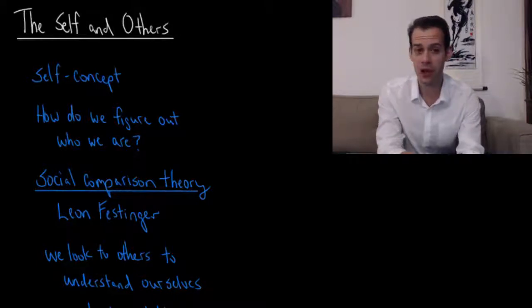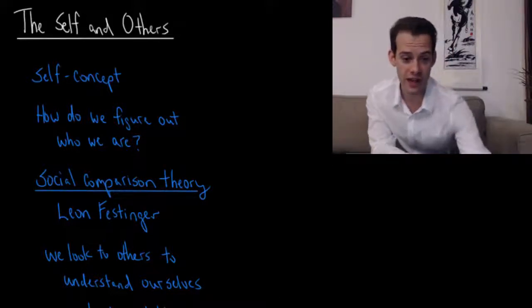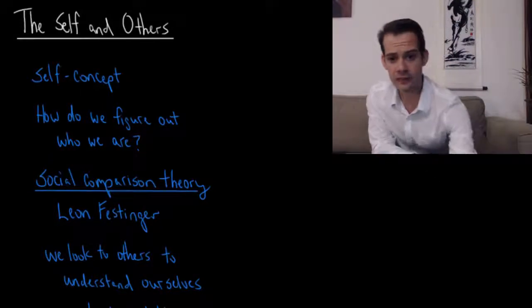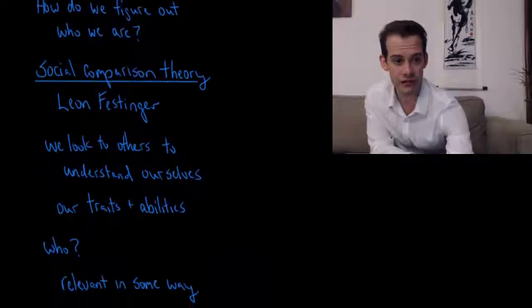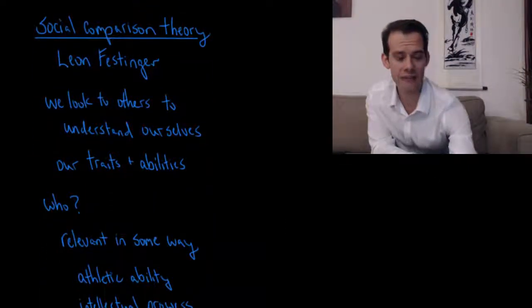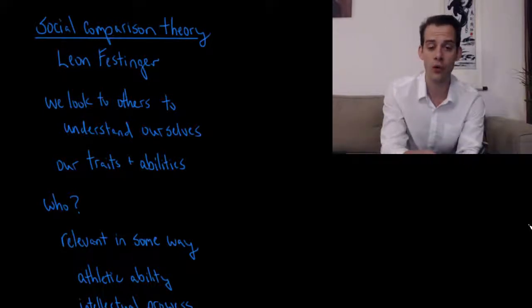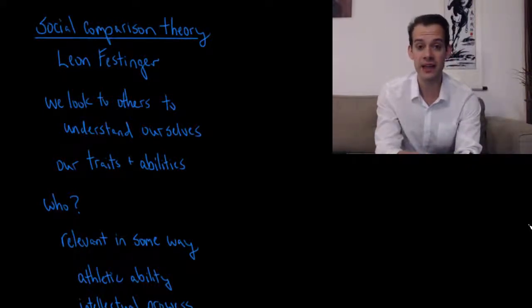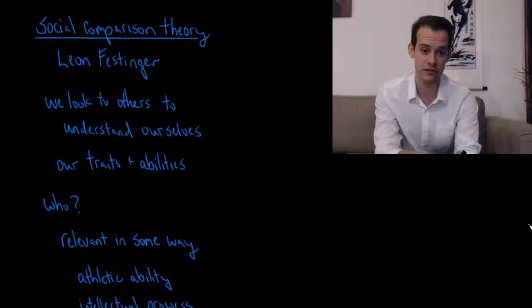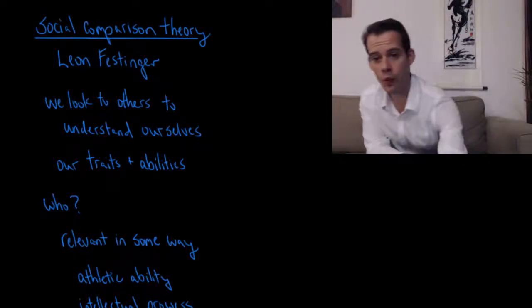Well, in part, we do this through what's called social comparison theory. This is the idea that we look to other people in order to understand ourselves. This was proposed by Leon Festinger, and here's a picture of Festinger here. We're going to learn more about Festinger in future videos. The idea was when we want to understand ourselves, we necessarily have to look to other people. We want to understand our own traits and our own abilities, and this involves comparison with others. So who do we compare ourselves to?